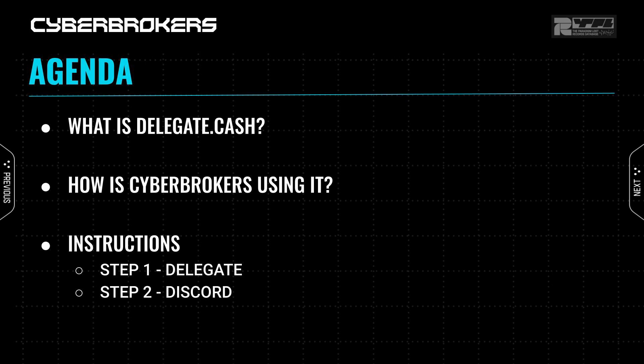The first question is probably, why are we doing this? And the answer is very simple. For months, we've all seen people post on Twitter and Discord about how they've lost assets through some phishing or scam attack. And it's because they're using a cold wallet as their primary wallet. This puts your assets at risk. Period. Using Delegate.cash fixes that, and we'll show you how.